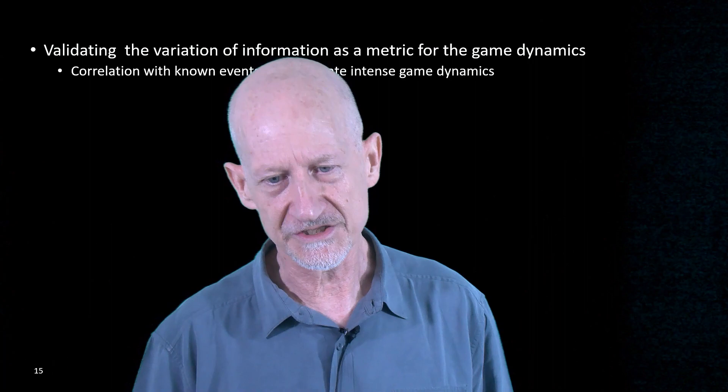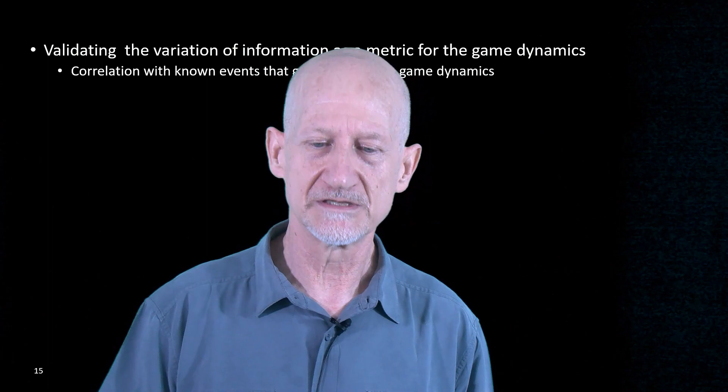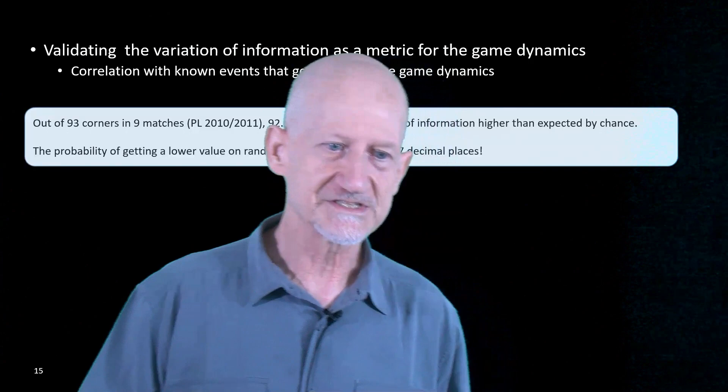So we looked at nine games, nine matches, where we found 93 corners in total, and out of those 93 corners, 86 had a higher variation of information when compared to random chance. So the probability of this happening is virtually zero, and it's a very strong confirmation of our hypothesis.